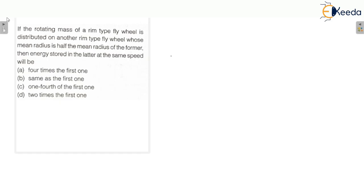In this question, the rotating mass is of a rim type flywheel distributed on another rim type flywheel. So both flywheels are of rim type, and the mean radius of the second rim type flywheel, R2, is half of the mean radius of the first one, R1. So R2 is equal to R1 divided by 2.